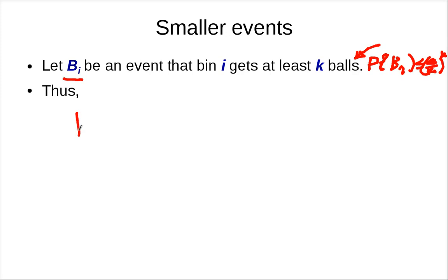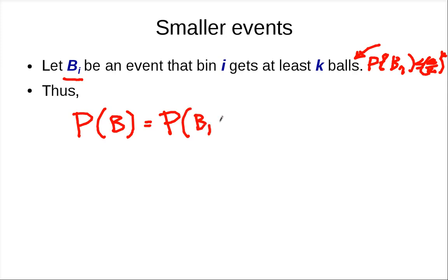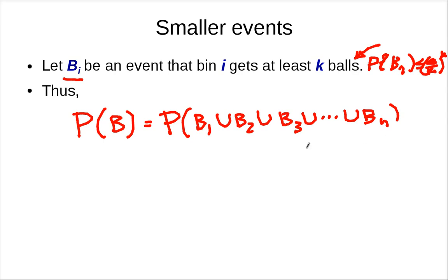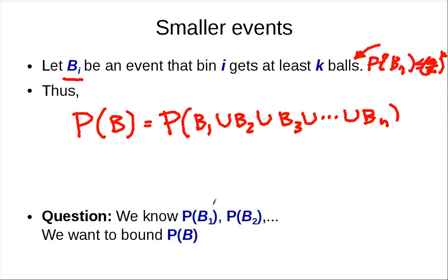With this definition, the probability of event B equals the probability of B_1 union B_2 union B_3 ... union B_n, because for B to be true, at least one of the B_i has to be true. The bad event is the union of the individual bad events. We know each probability of B_i — they are all equal, each at most (e/k)^k — since in our analysis of bin 1, we don't actually use the fact that it is bin 1, just that it is one particular bin.